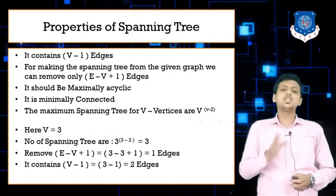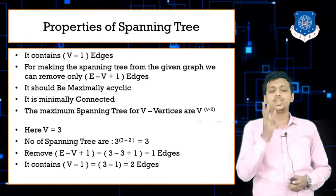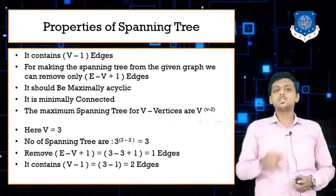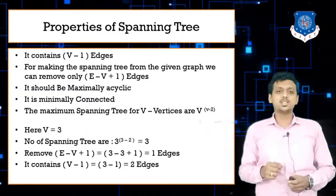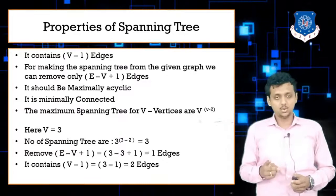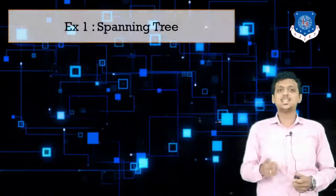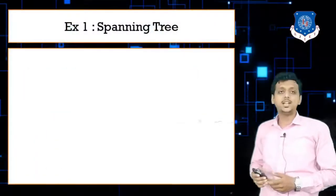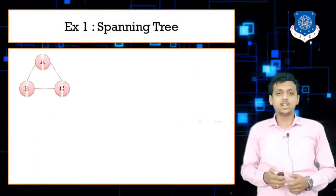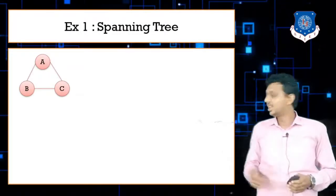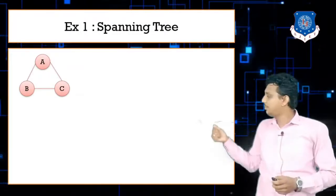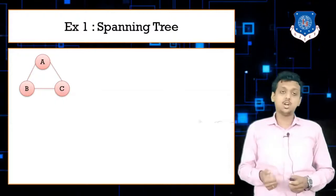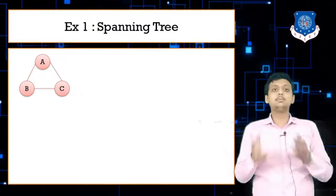If we have a graph of 3 vertices and 3 edges, then our spanning tree must contain 2 edges. Let us take example number 1: make a spanning tree from the particular graph. This is the best example to show spanning tree theory because it is a minimum graph.